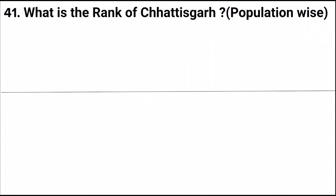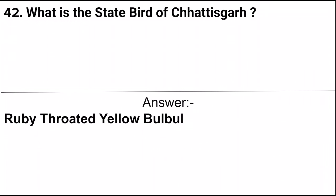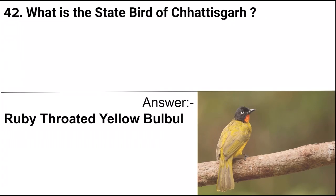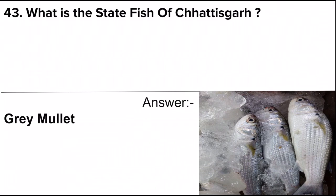Next question: What is the rank of Chhattisgarh population-wise? Answer: 17th. Next question: What is the state bird of Chhattisgarh? Answer: Ruby-throated Yellow Bulbul. Next question: What is the state fish of Chhattisgarh? Answer: Gray Mullet.